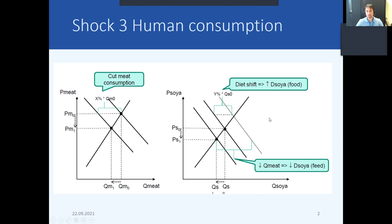At the same time, we should expect different effects on other products because the demand for meat is also related to soy, which is used as a feed component for livestock. So a reduction in the quantity or production of meat should also have an effect on the demand for soy used as feed — meaning we should expect a reduction in feed prices. But if we also exogenously shock the demand for soy used as food consumption, we should expect changes or an increase in prices.